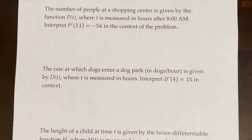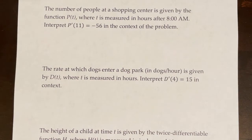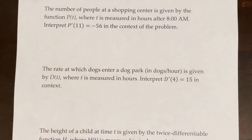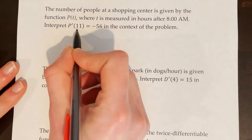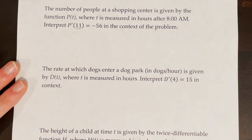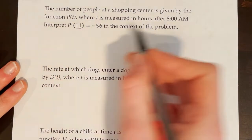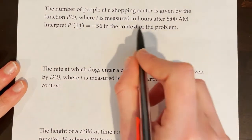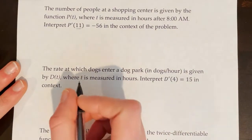The number of people at a shopping center is given by the function p of t, where t is measured in hours after 8 o'clock a.m. Interpret p'(11) = -56 in the context of the problem. We're going to use that same phrase. At t is equal to 11 — and you can either say at t equals 11 or at 7 o'clock p.m., because that's 11 hours after 8 a.m. Either one of those works.